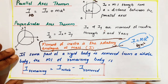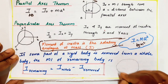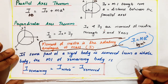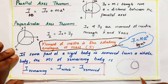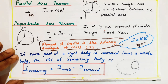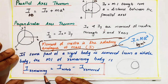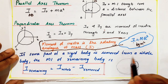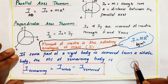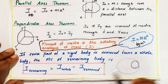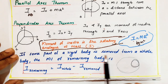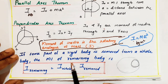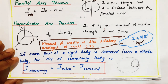Sometimes they will give a whole body and ask you to remove a portion from it. For example, a sphere with a small sphere removed — what is the moment of inertia of the remaining body? In that case, the moment of inertia of the remaining body equals the moment of inertia of the whole body minus the moment of inertia of the removed portion: I_remaining equals I_whole minus I_removed.